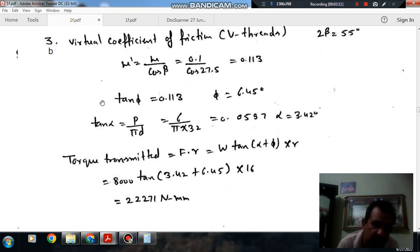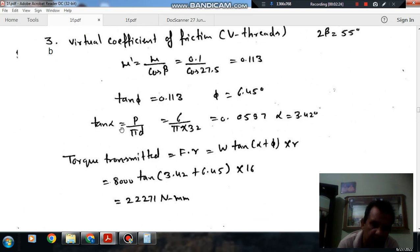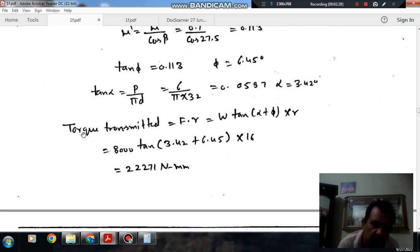Similarly, as in last question, the helix angle is given by p divided by pi d. P is 6 mm and mean diameter is given as 32 mm, so alpha comes out as 3.42 degrees.